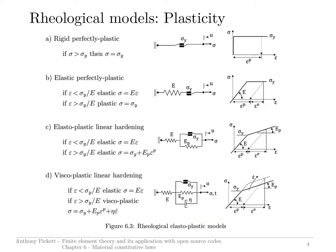Four variations of plasticity rheological models are shown on this slide. The first introduces a friction element which provides a rigid connection until a certain stress is reached, at which point you have pure perfect plasticity and the element slides. If unloading occurs at any particular point, you would come down here and have a permanent plastic strain within the material. If reloading occurred, you would come back up here and continue in this direction.